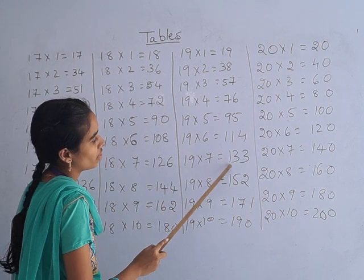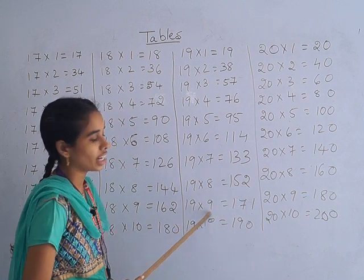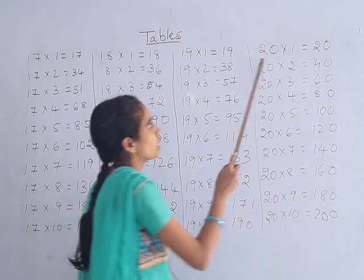19 sixes are 114, 19 sevens are 133, 19 eights are 152, 19 nines are 171, 19 tens are 119.